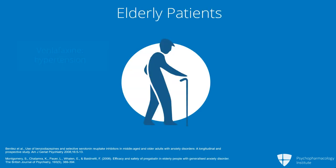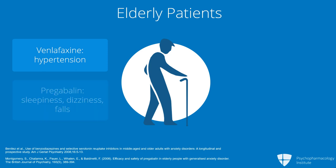SNRIs can raise blood pressure — at least venlafaxine — and that can be worse in the elderly. And pregabalin, if you use that, causes sleepiness, dizziness, and falls. Fractures have occurred in some of the controlled work with pregabalin in the elderly. Basically, you have to monitor them much more closely.